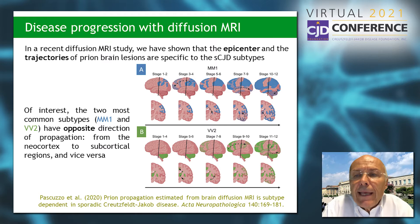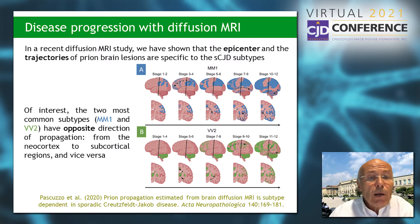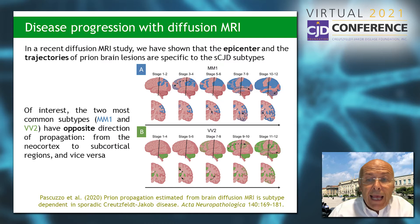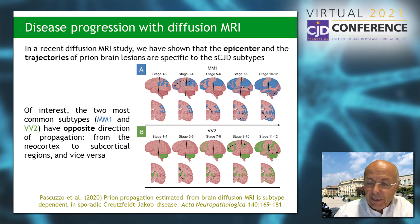In another study, we have shown that the epicenter and the trajectories of prion brain lesions are specific to the CJD subtype. The two most common subtypes, MM1 and VV2, have opposite directions of propagation. In stages 1–2 of the disease, lesions start in the parietal lobe in MM1 and then extend to the frontal lobe, and later to the striatum and thalamus. On the contrary, in VV2, the disease starts in the cerebellum and the thalamus, then in the caudate nucleus, and only in later stages extends to involve the frontal cortex and then the parietal and occipital cortex.